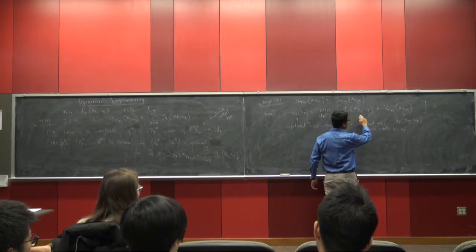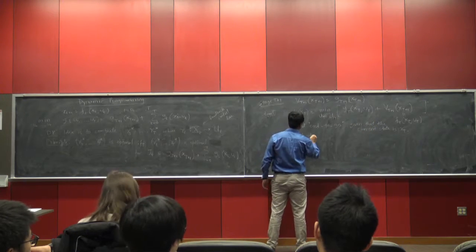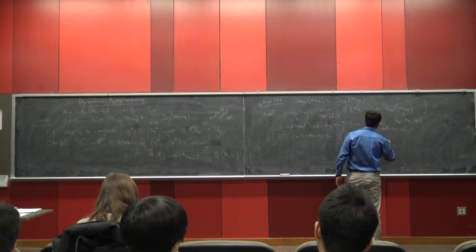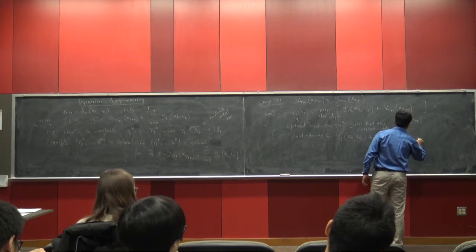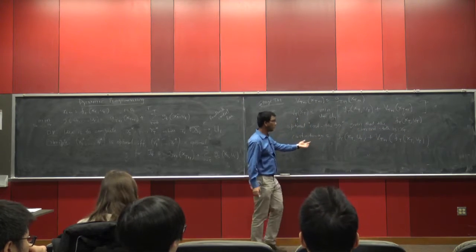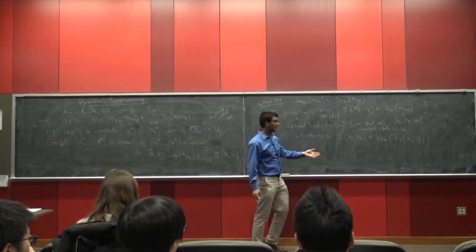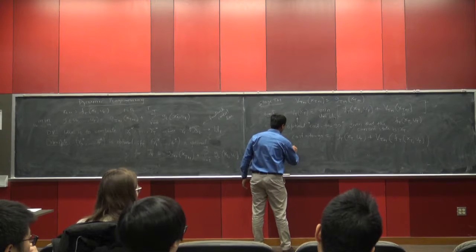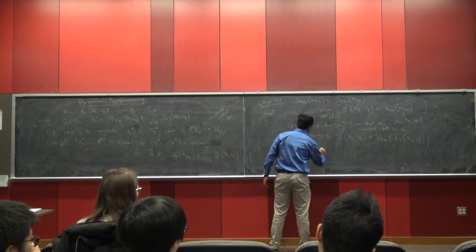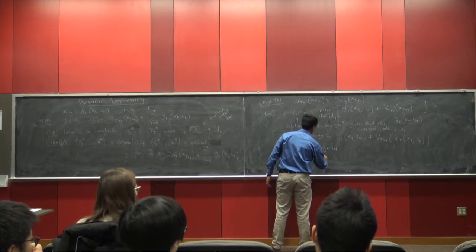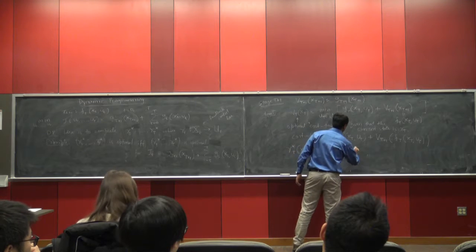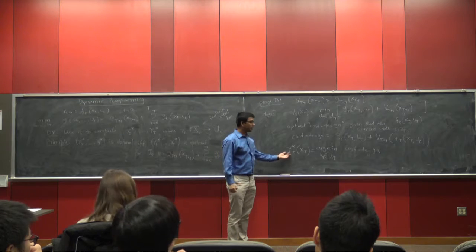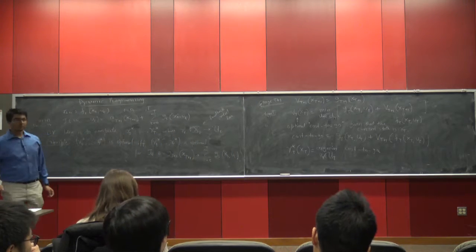The cost-to-go is equal to G_T(x_T, u_T) + V_{T+1}(F_T(x_T, u_T)), which includes both optimal and non-optimal contributions. Then you take the minimum with respect to u_T and you get the optimal cost-to-go. You define γ*_T(x_T) as the argmin over u_T of the cost-to-go, and this is your optimal policy.